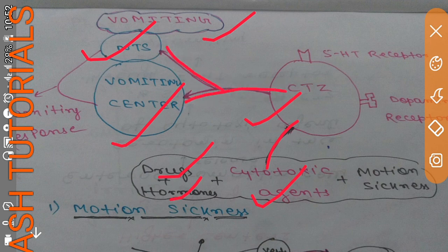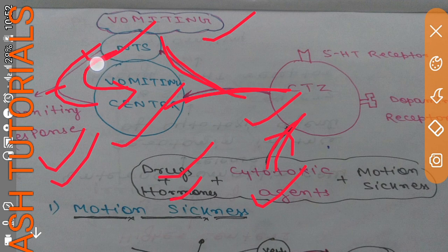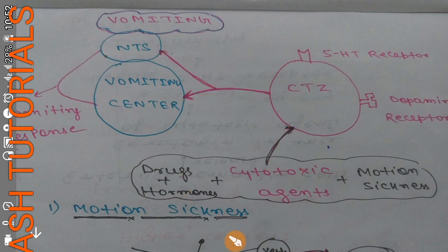The NTS is also stimulated and passes fibers to the vomiting center. Both the CTZ and NTS stimulate the vomiting center, and together these two structures cause the vomiting response.